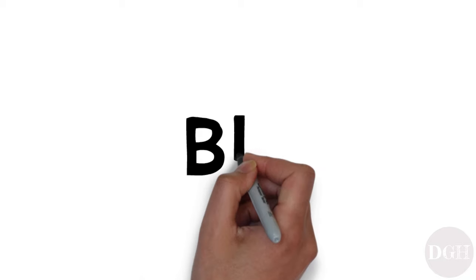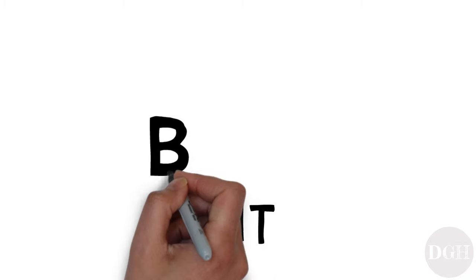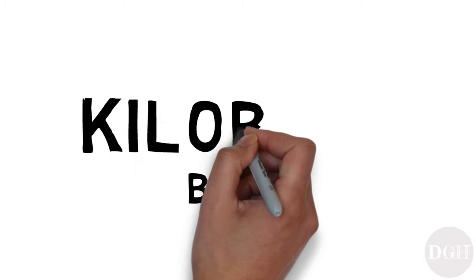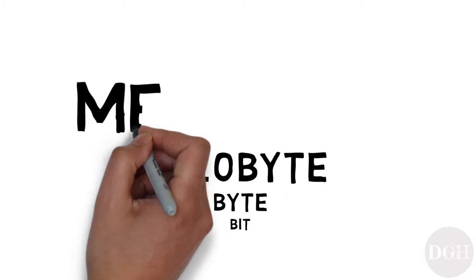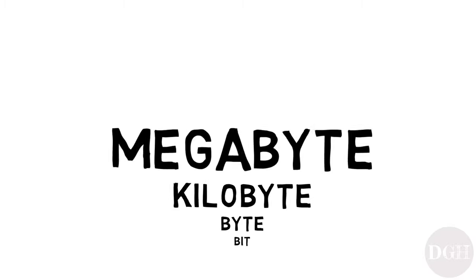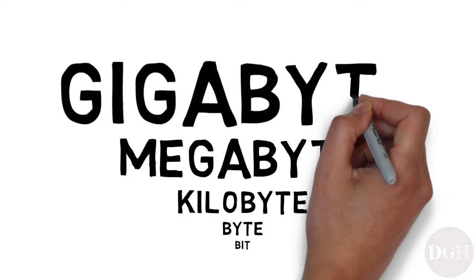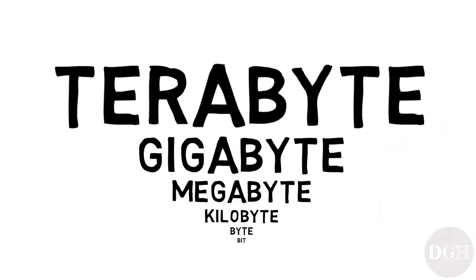To recap: there are eight bits in one byte, a thousand bytes in one kilobyte, a thousand kilobytes in one megabyte, a thousand megabytes in one gigabyte, and a thousand gigabytes in one terabyte. And that's enough to know for everyday usage.